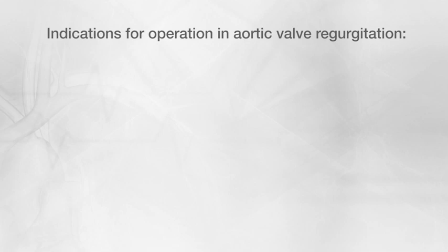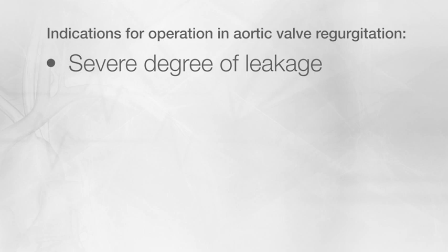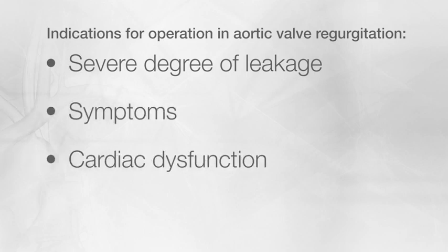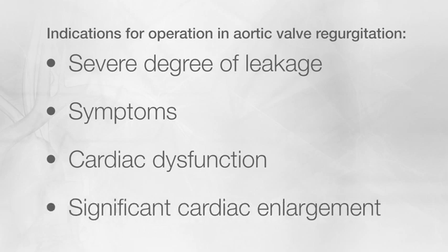Diagnosis is again predominantly suspected based on physical examination and confirmed by transthoracic echocardiography. Just like aortic stenosis, we're able to quantify the severity of leakage, but sometimes transesophageal echocardiography or a cardiac MRI is required to better understand the degree of leakage. Indications for an operation in aortic valve regurgitation include a severe degree of leakage in combination with symptoms, cardiac dysfunction, or significant cardiac enlargement.